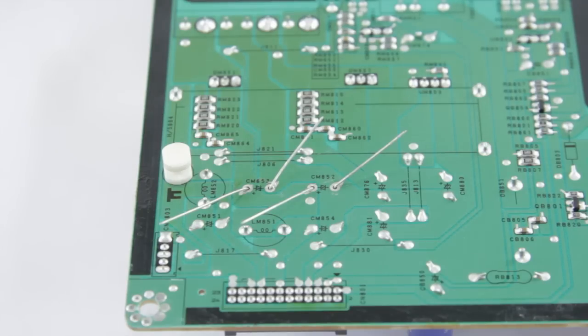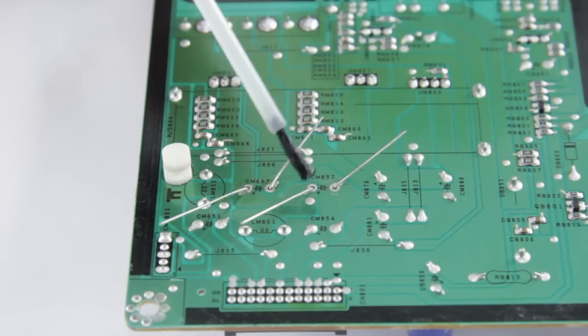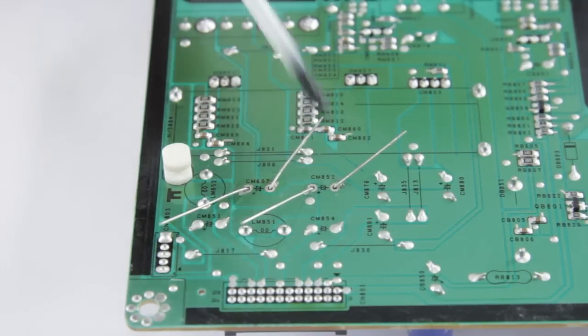So we're going to take our flux. We are using rosin core, but the flux just helps it flow a little bit better and get right into the joint. I'm going to paint that on both of those.